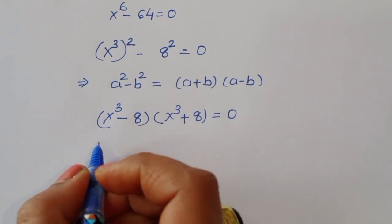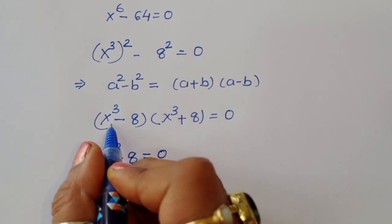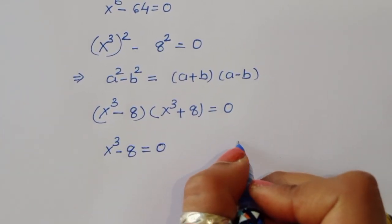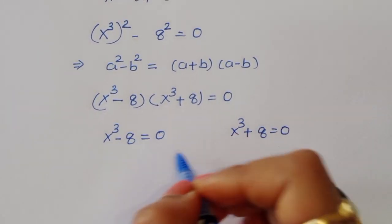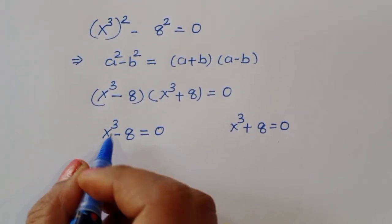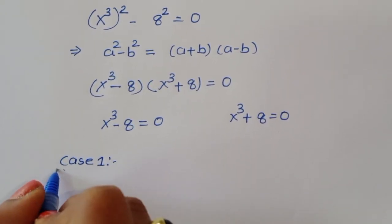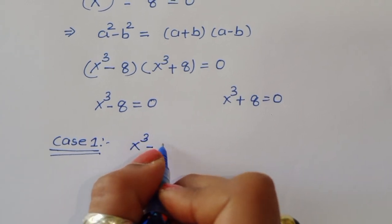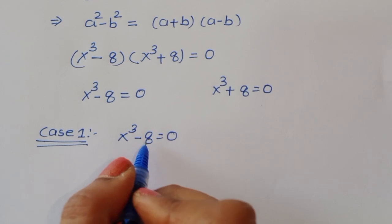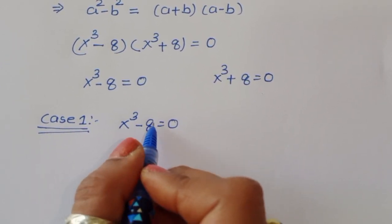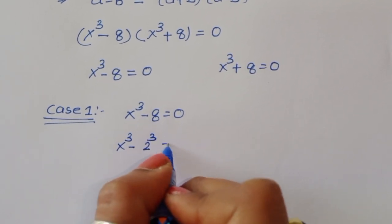The first equation is x cubed minus 8 is equal to 0, and the second is x cubed plus 8 is equal to 0. We will solve them one by one. Case 1: x cubed minus 8 is equal to 0. We can convert this into cube form: x cubed minus 2 cubed is equal to 0.